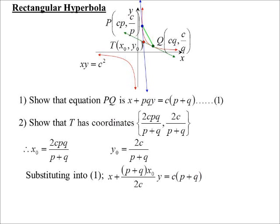So if I substitute in, we're rearranging it. I get x plus P plus Q, x0 on 2c, y is equal to c times P plus Q. I've still got P plus Qs in there. But I can get rid of P plus Q, because using the y0, I can say P plus Q is, let's get it the right way around, it would end up being 2c over y0, because y0 is equal to 2c on P plus Q. So substituting that in for P plus Q, and we've got rid of the P's and Q's.